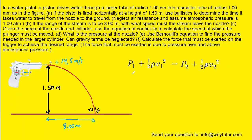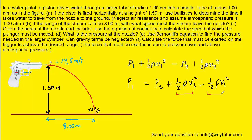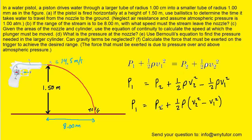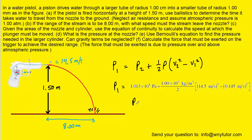With that simplification, we solve for P1 — the pressure in the larger cylinder. We subtract the half-rho-v-squared term to the right side and factor out the greatest common factor of one-half times the density. P2 is atmospheric pressure, and rho — the density of water — is 1,000 kilograms per meter cubed. Plugging in all known values including the speeds, we get approximately 2.06 times 10 to the fifth Pascals.